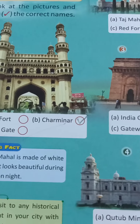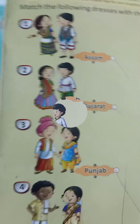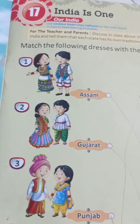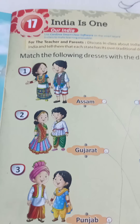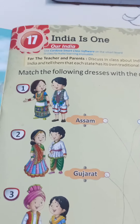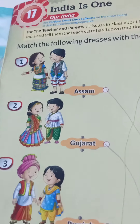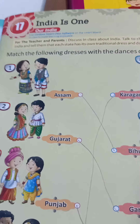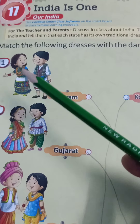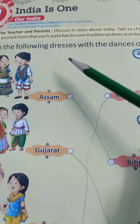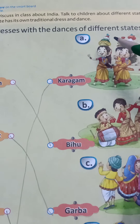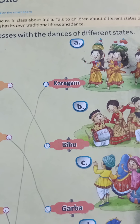Coming to the next page, children — Chapter 17, India is One. Here some pictures are given. What we have to do: match the following dresses with the dancers of different states.